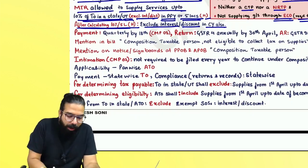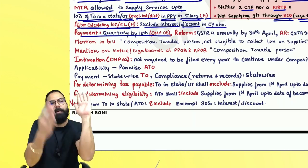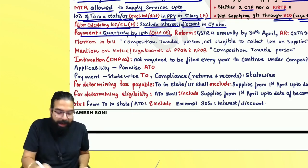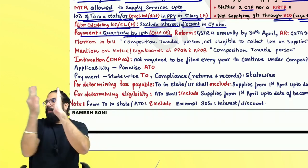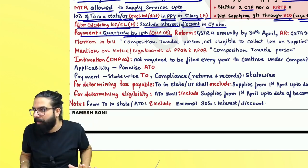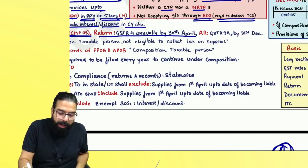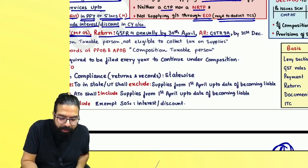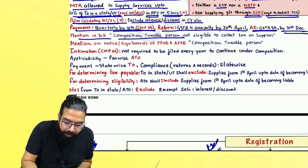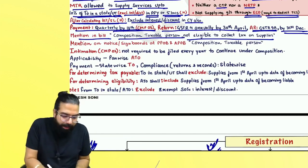A composition person always makes quarterly payment. The quarters are fixed: April-June, July-September, October-December, January-March. Once every quarter gets over, whatever is the turnover, they make the payment and file one intimation in CMP-08 — after every quarter by the 18th of the next month. Once the year gets over, by 30th April they file GSTR-4. Annually they file GSTR-9A by 31st December.